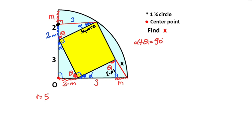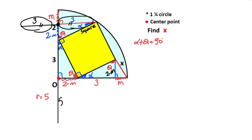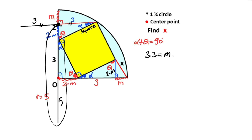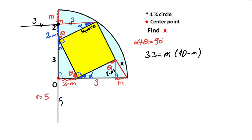If we apply the power of a point formula for this point — notice that if we extend here, and this side is three, then this side must also equal three units. If we complete the bottom as a full circle, we can easily apply the power of a point formula. Therefore: three times three equals m times (10 minus m). So 9 equals 10m minus m squared.